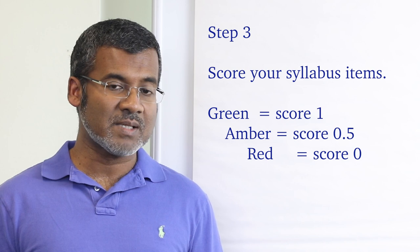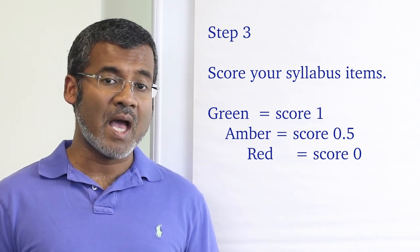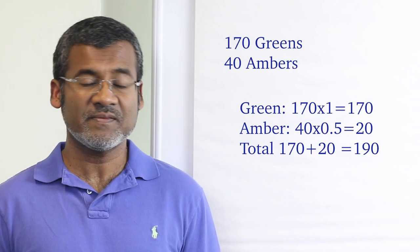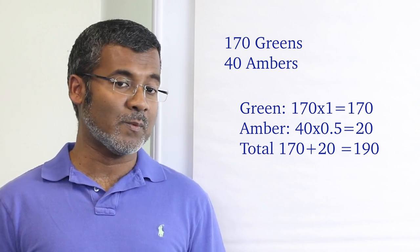Step number three. Let's do some scoring. All the greens get a score of one. All the ambers get a score of 0.5. And all the reds get a score of zero. Count all the greens and all the ambers. Say you had 170 greens and 40 ambers. Your total score will be 190.